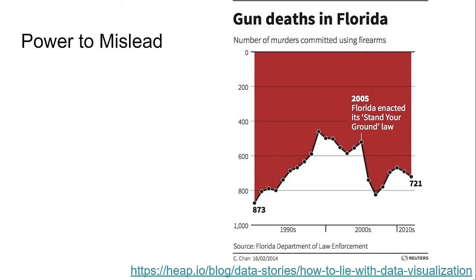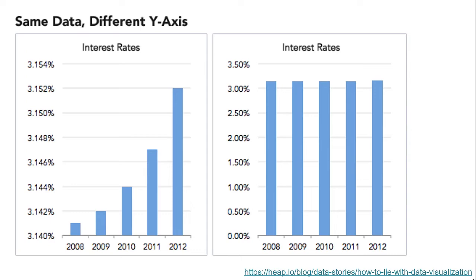Data visualization also has the power to mislead. This visualization of gun deaths in Florida presents data with an upside-down Y axis, so that when violent crime is going up, it could easily be misread as going down. And here are two charts showing the same changes in interest rates over time. If you're only glancing at the chart on the left, it would be reasonable to assume staggering growth in interest rates, but the real change is about one one-hundredth of one percent.